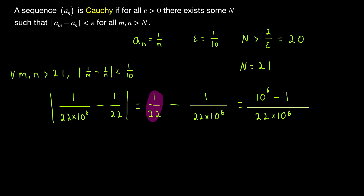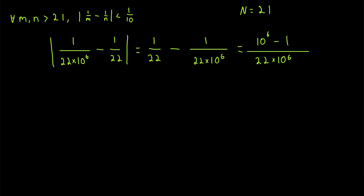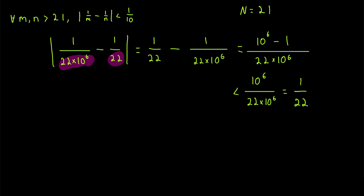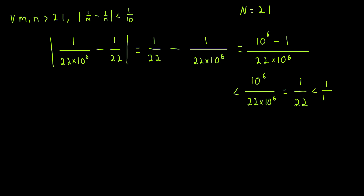Bringing these two fractions together by giving them the same denominator, it would equal 10 to the power of 6 minus 1 over 22 million. That's multiplying one fraction by a million over a million so we have the same denominators and can do the subtraction. Of course, 10 to the power of 6 minus 1 over 22 million must be just a little bit smaller than 10 to the power of 6 over 22 million without the minus 1 in the numerator. So if we don't subtract that 1, we get a number that's a little bit bigger. But then the 10 to the powers of 6 cancel out, and this is actually equal to 1 over 22. So the distance between these two terms is less than 1 over 22, which is less than 1/10.